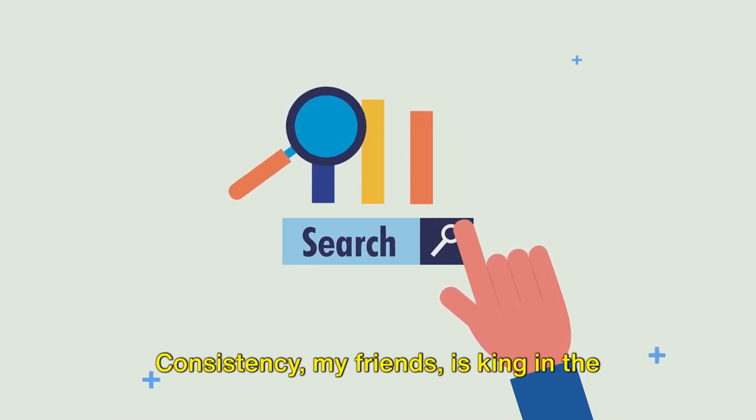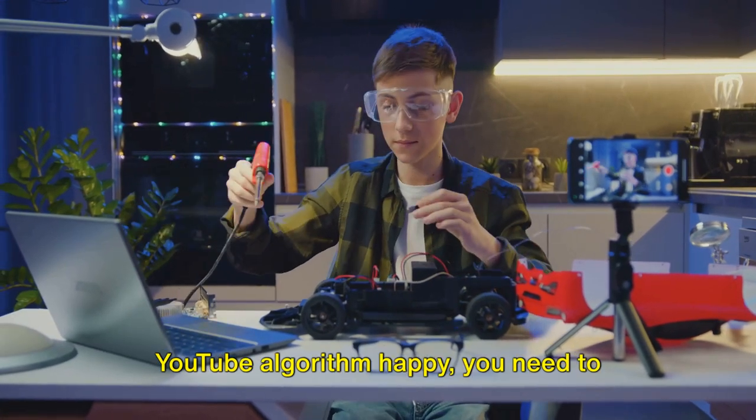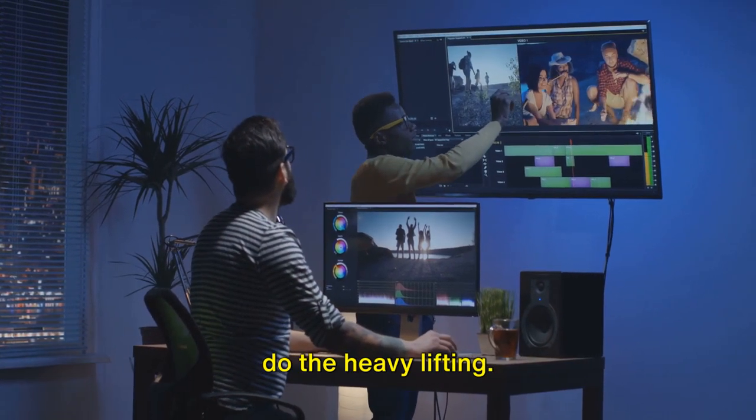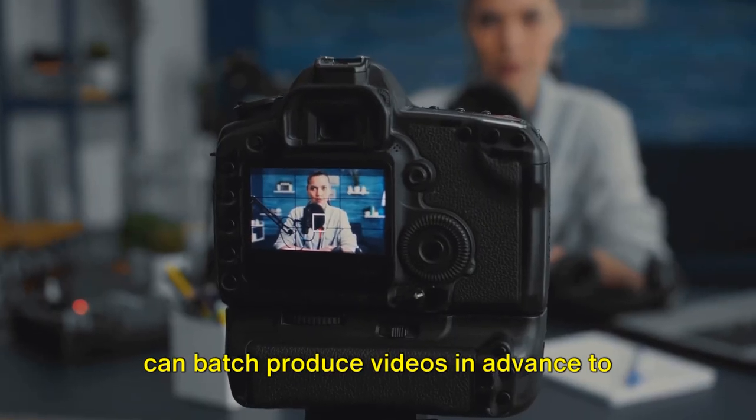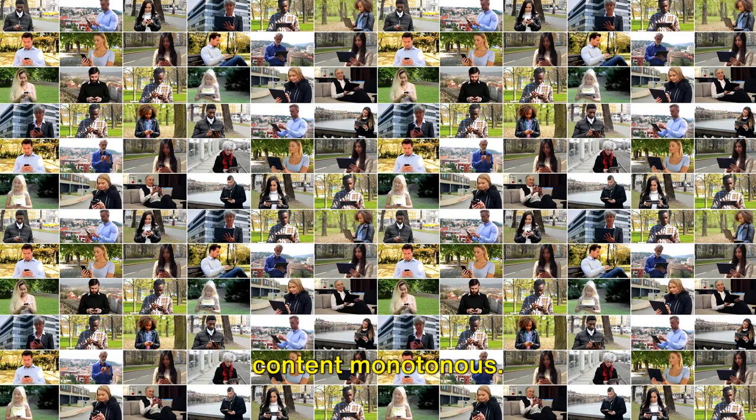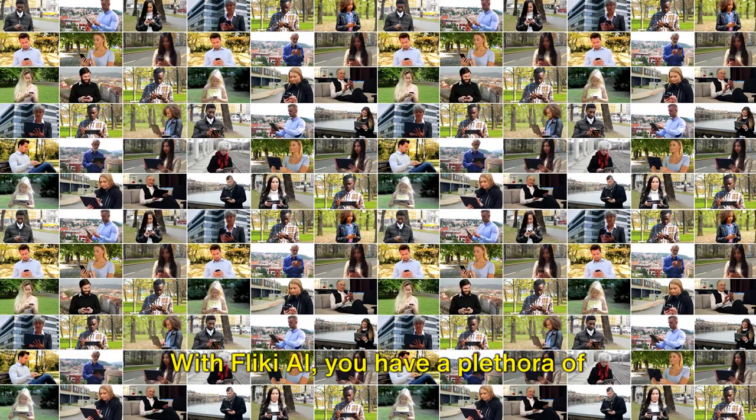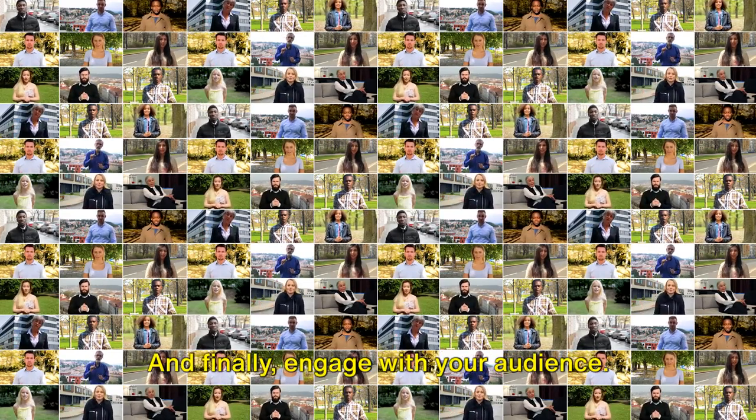Now, on to consistency. Consistency, my friends, is king in the YouTube realm. To build a loyal audience and keep the YouTube algorithm happy, you need to publish regularly. Set a schedule, stick to it, and let AI do the heavy lifting. With tools like ChatGPT and FlickyAI, you can batch produce videos in advance to maintain a steady flow of content. But don't let the routine make your content monotonous. Experiment with different video styles and templates. Keep your content fresh and exciting. Remember, variety is the spice of life and it's no different on YouTube. With FlickyAI, you have a plethora of styles and templates at your disposal. Use them to your advantage.